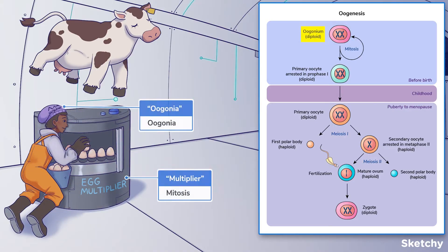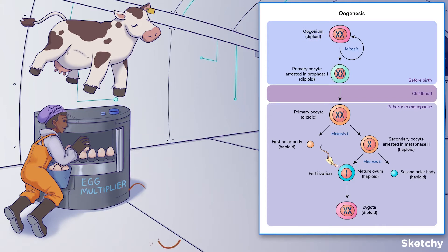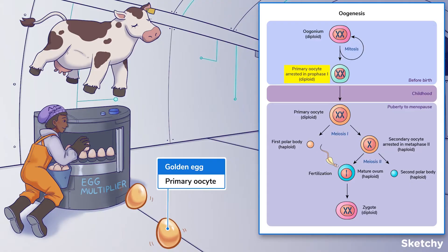Oogonia then multiply via mitosis between weeks 9 to 22 of gestation. By week 24, the female ovaries will have up to 7 million oogonia. Unfortunately, most of these oogonia will die, and the rest turn into primary oocytes.